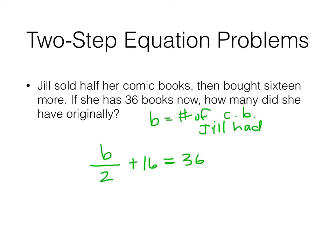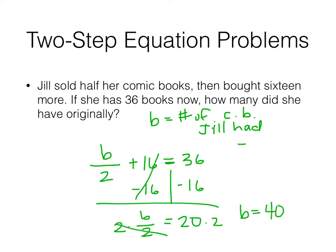And now I can go ahead and solve the equation. So B over 2 is equal to 20. And multiply to get rid of the divided by 2 there. B equals 40. So Jill had 40 comic books. And I won't be lazy this time. I'll write it out. All right. Let's do another one.